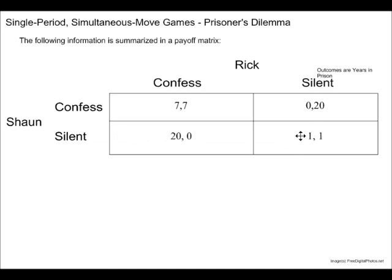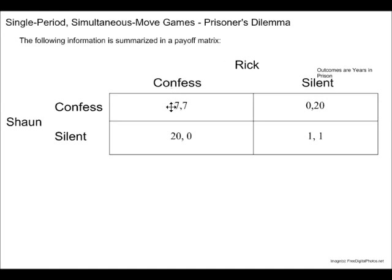In the lower right, we have that Rick remains silent and Sean remains silent as well. Inside each of the elements of this matrix are two values. The first value always corresponds to the outcome for the person on the left. The second value always corresponds to the person on the right. So if Sean chooses to confess and Rick chooses to confess, Sean will end up with seven — in this context, the number of years in prison.